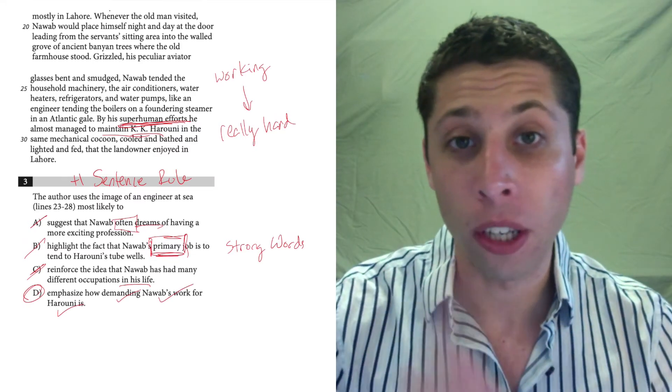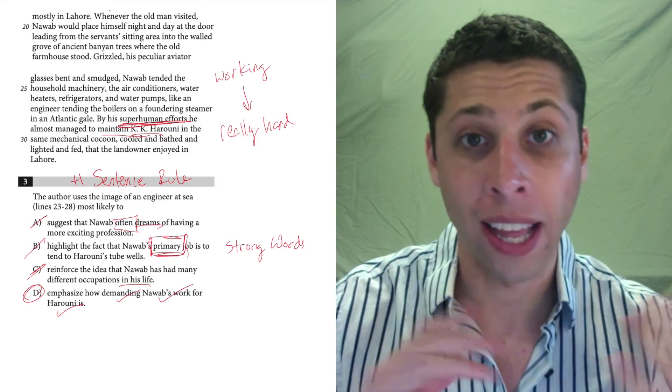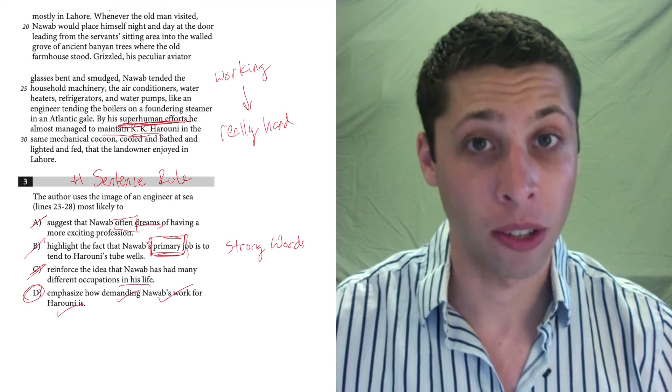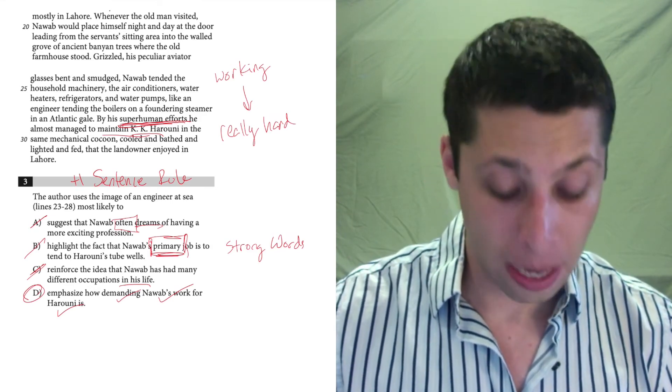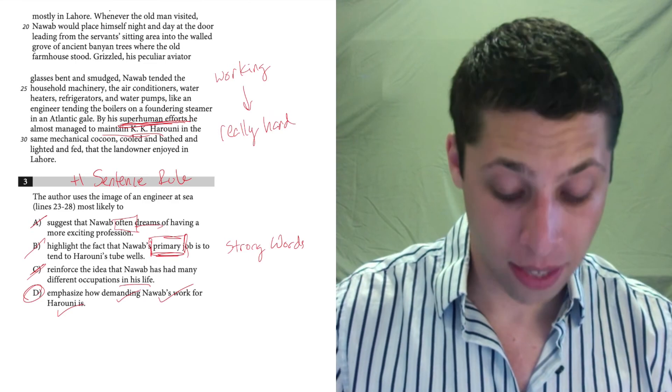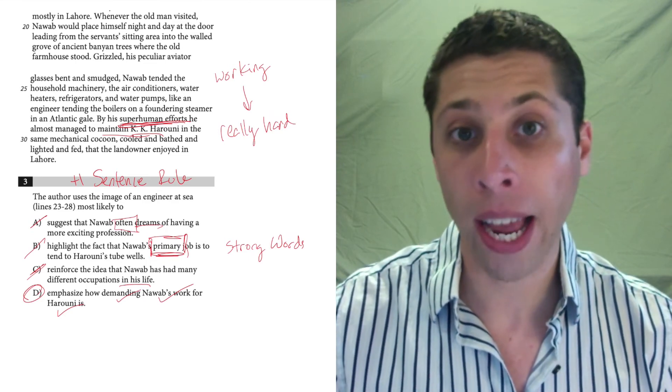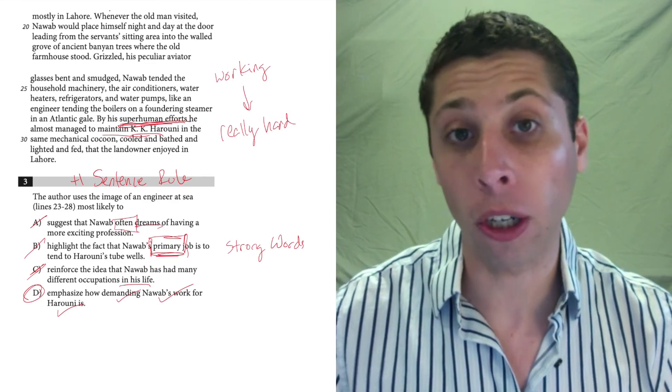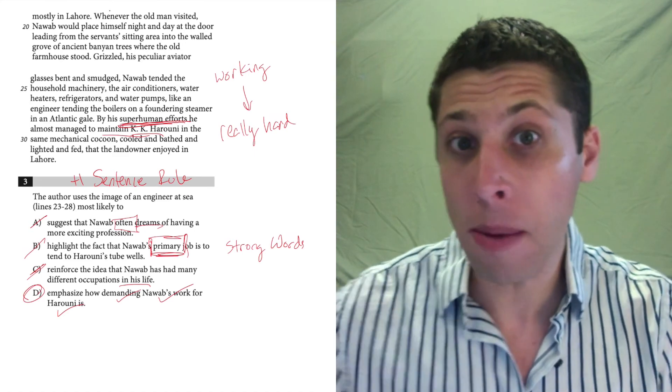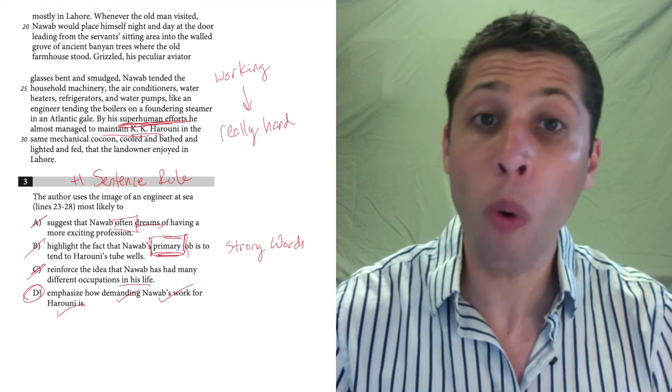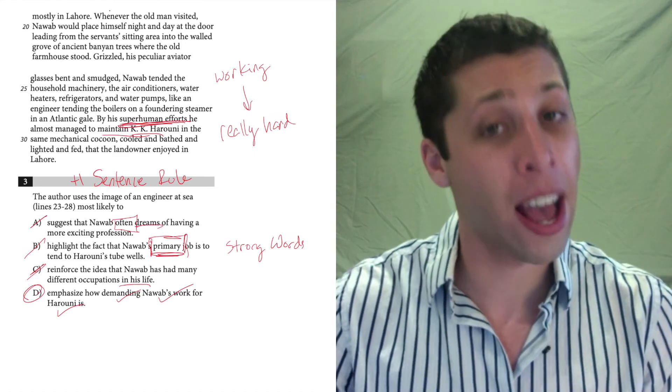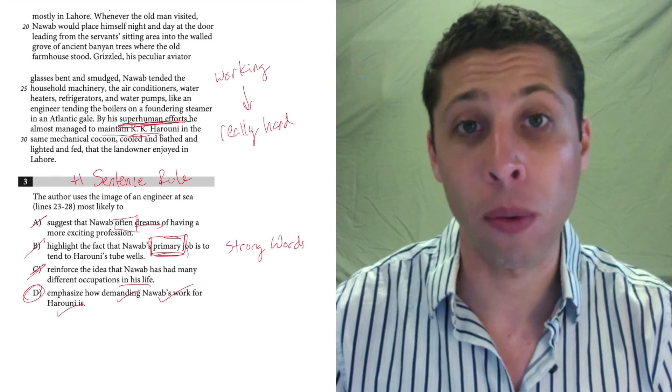That's a lot of check marks with that choice. So this is a good example where the plus one sentence rule gives us a little extra that really confirms the choice that we may have picked anyway, but now we're really certain of. So always read plus one sentence before and after a line reference that they give you in the question.